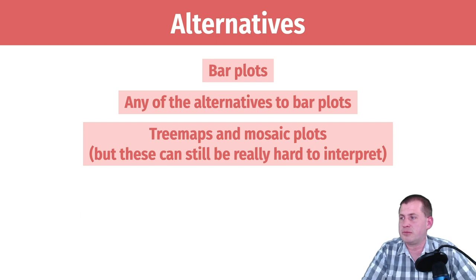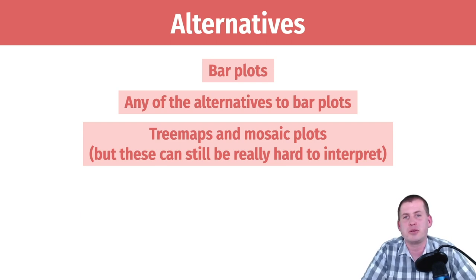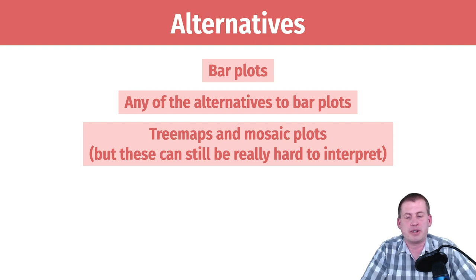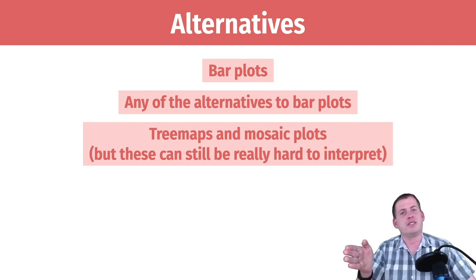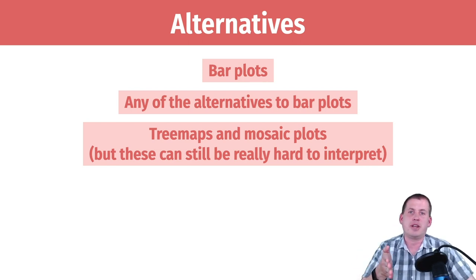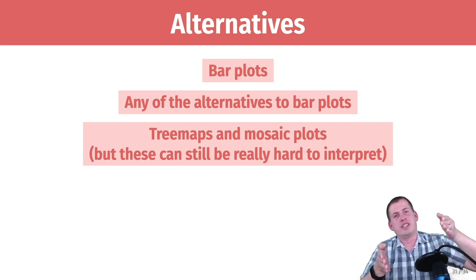There are also things called tree maps and mosaic plots. These are popular when you're working with categorical variables that are just different categories — like two different survey responses. If you want to see if Republicans, independents, or Democrats strongly agree or slightly agree on a Likert scale.